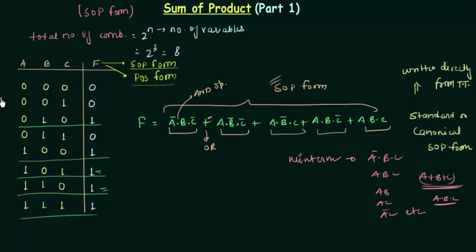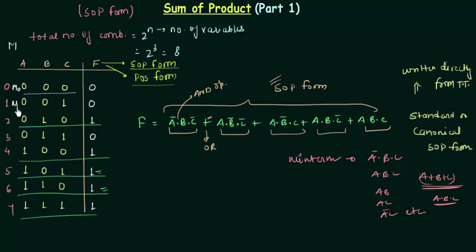We write min terms by first writing down the decimal equivalent of the binary combinations: 0,0,0 is 0, then 1, 2, 3, 4, 5, 6, 7. Now we write down the min terms using a small m — small m represents a min term, while capital M represents a max term. The subscript number represents the decimal equivalent. So I can represent the cases as m0, m1, m2, m3, m4, m5, m6, and m7. This is how I write down the min terms.